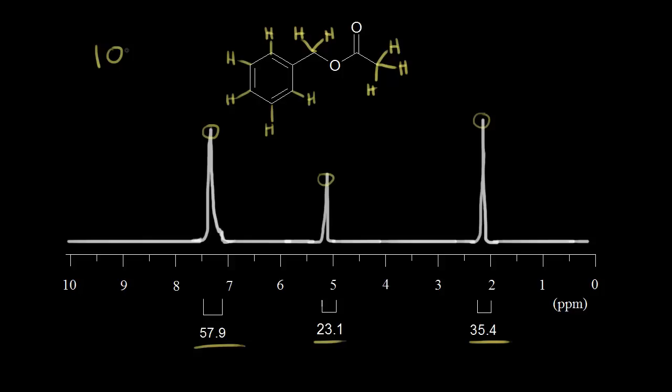Going back to the integration values, you find the smallest integration value. Out of those three numbers, 23.1 is the smallest integration value. We're going to divide all three integration values by the smallest one.